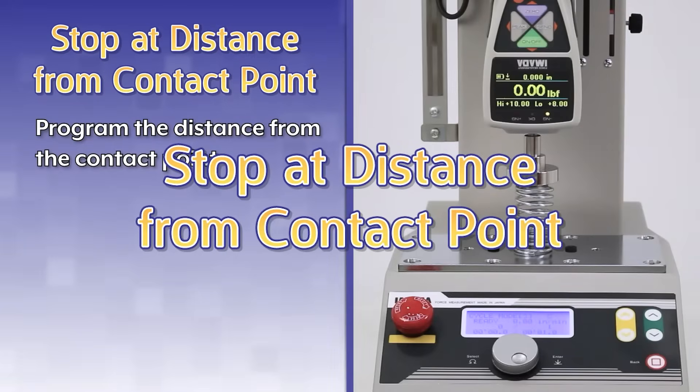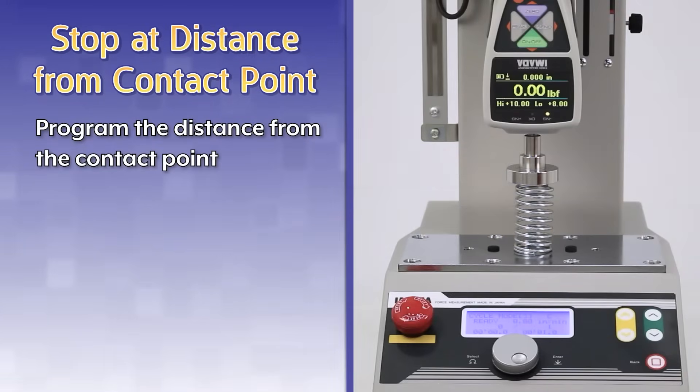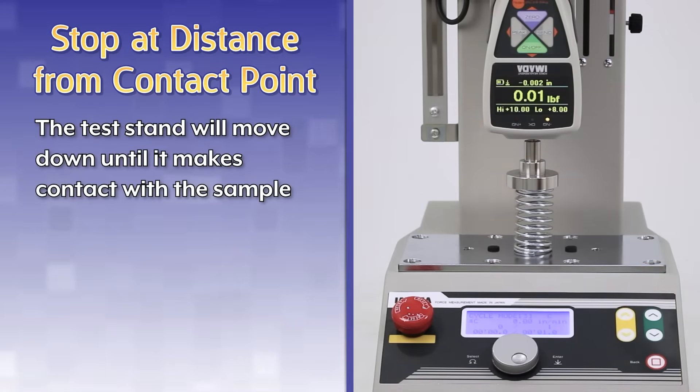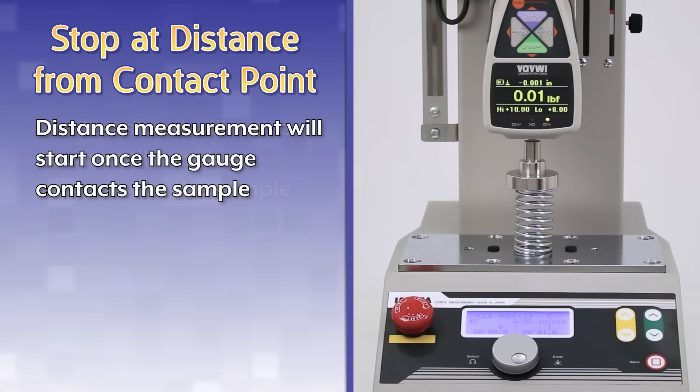Stop at distance from contact point. Program the distance from the contact point. The test stand will move down until it makes contact with the sample. Distance measurement will start once the gauge contacts the sample.